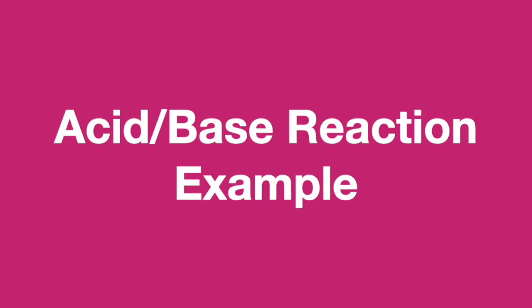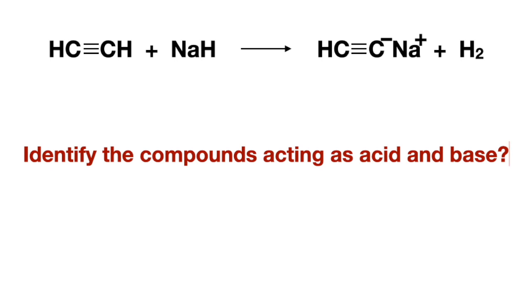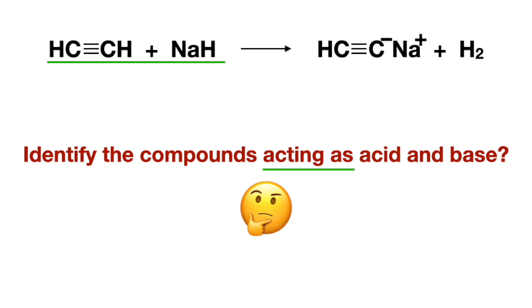Now let's get into some actual reaction examples. In our first example, we're asked to identify the compounds acting as an acid and a base. 'Acting as' means they are reactants, so your answer has to come from the reactant side, which already narrows down your options. One way to determine which reactant is acting as an acid or base is to follow one of the reactants to the product side and see what happened to it.